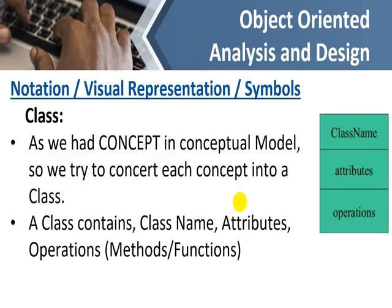Here we have the class representation. We can describe a class with three compartments or portions: the first portion keeps the name of the class, then we define the attributes of that particular class, and here we have the operations or methods or functions. A class contains the class name, attributes and operations.